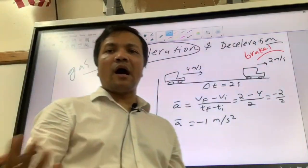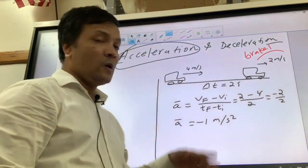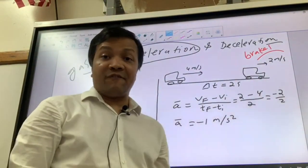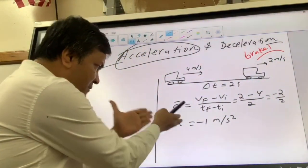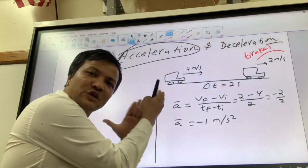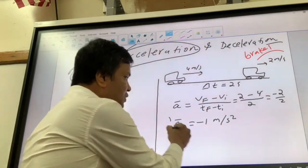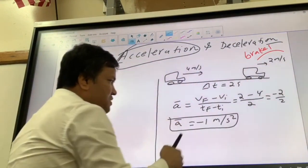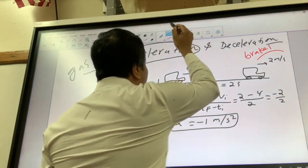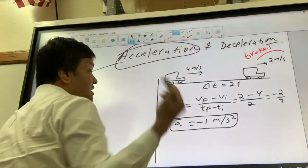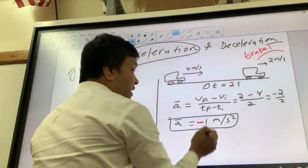Now when you see acceleration is negative 1 meter per second squared, what does that tell you? Is the car slowing down or speeding up? You don't know. So the first thing we have to do is convert this to a vector — we have to convert this information into a vector.